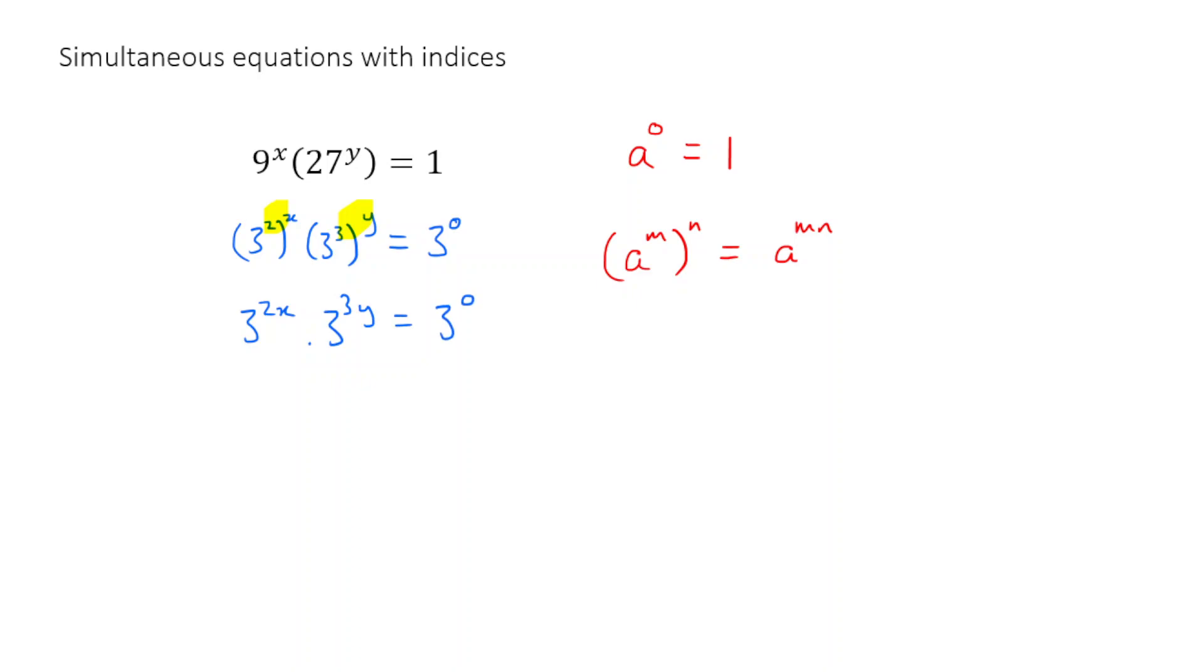And we can simplify again, because now we can combine these two powers. How do we do that? Well, we know this rule from before. If I have a to the power of m times a to the power of n, then I add the powers, a to the power of m plus n. So here, I can simplify to give 3 to the power of 2x plus 3y is equal to 3 to the power of 0.